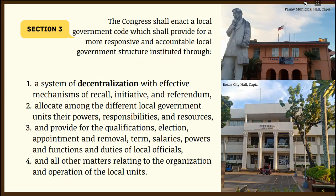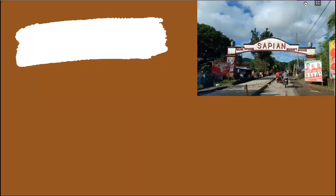Section 3 mentions decentralization. Decentralization is the process of transferring powers from the national to local governments to allow maximum participation of citizens in governmental and community activities. According to Professor Brillantes, decentralization is the dispersal of power or authority from the center — giving power to local governments from the national. He also identifies this as political decentralization, which connects to the concept of local autonomy we discussed.